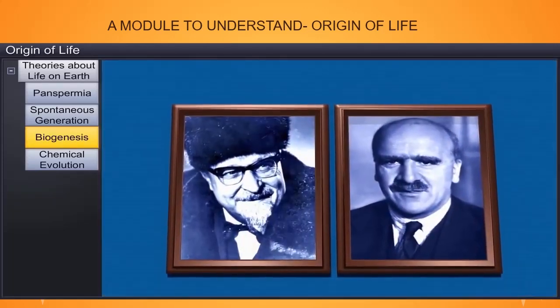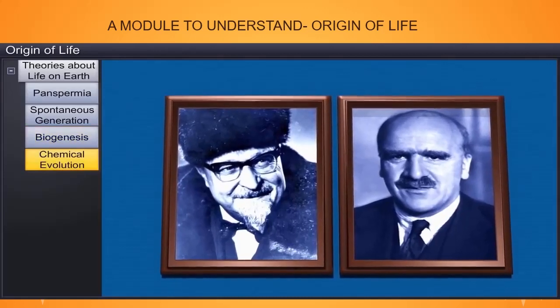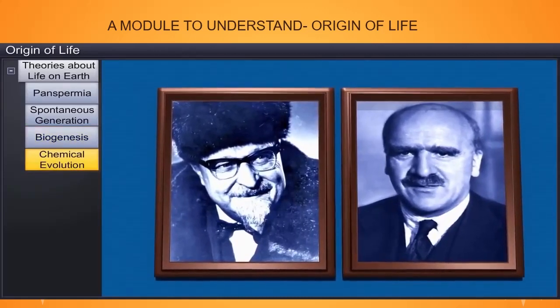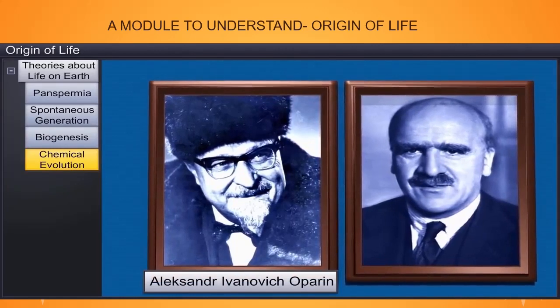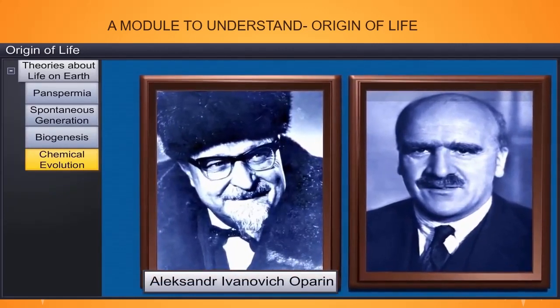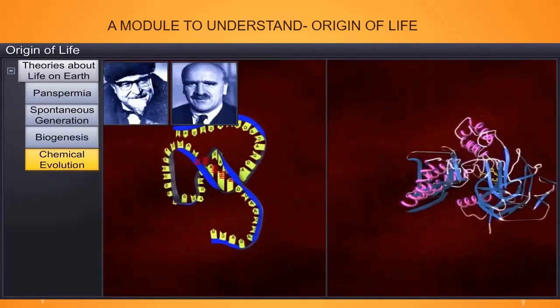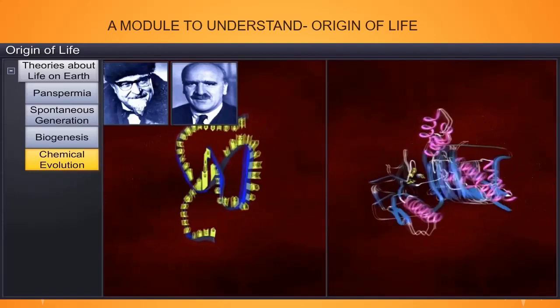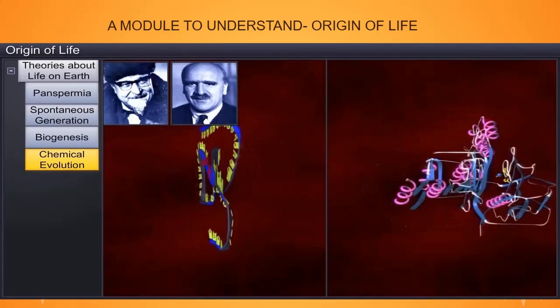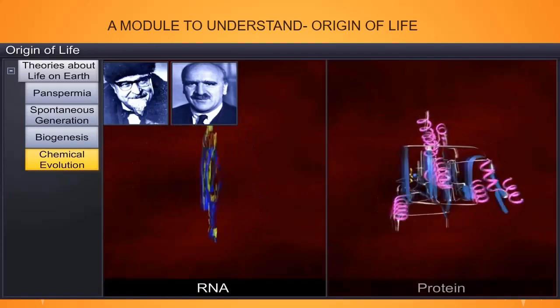Another theory, called the theory of chemical evolution, was expounded by Russian scientist Alexander Ivanovich Oparin and British scientist John Burden Sanderson Haldane. They proposed that the first form of life originated from pre-existing, non-living organic molecules, such as RNA and protein.